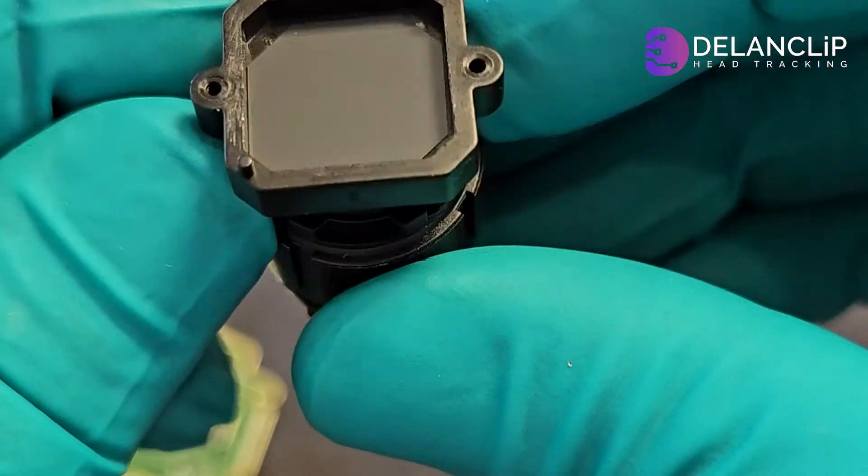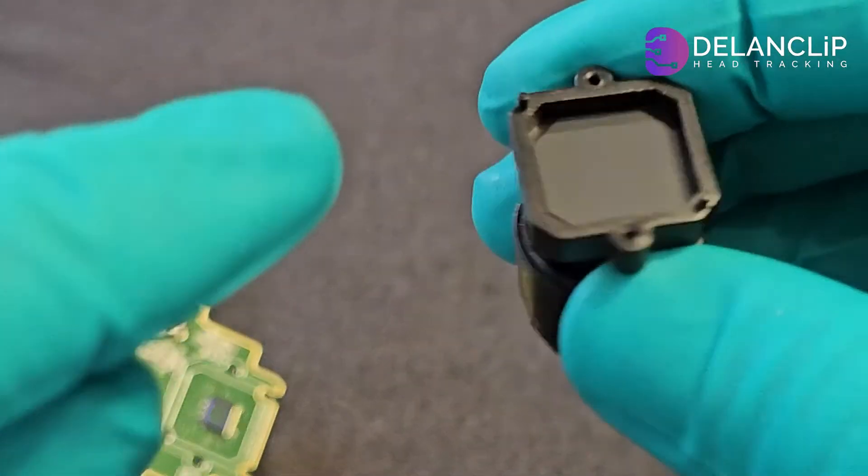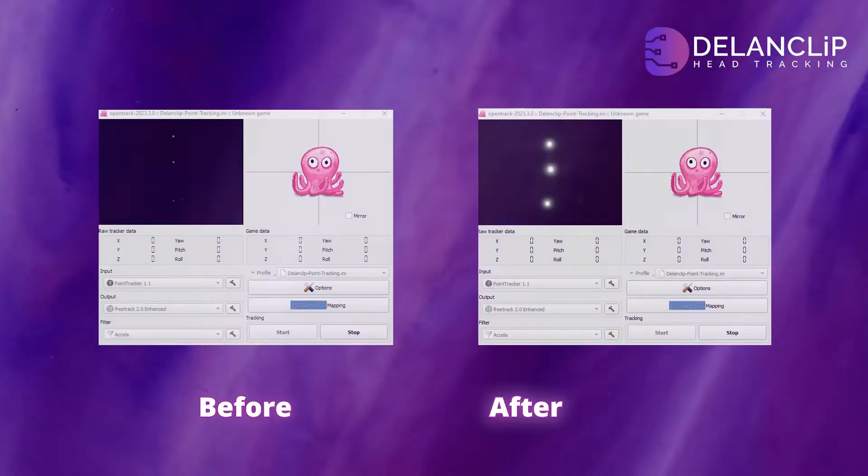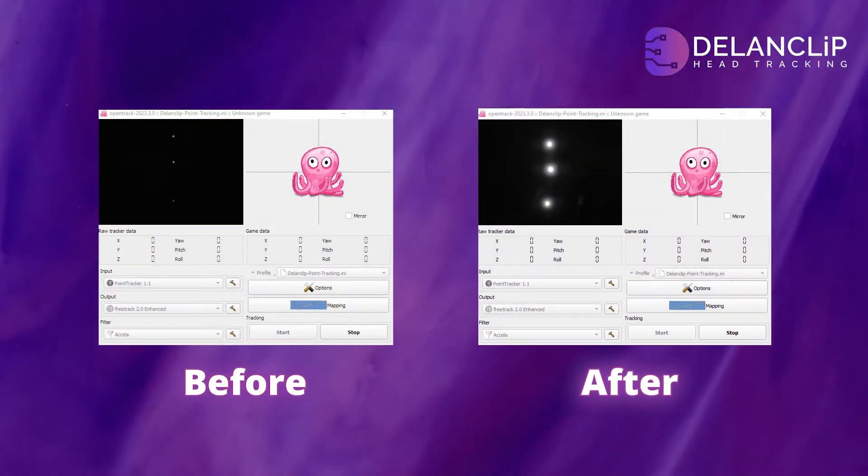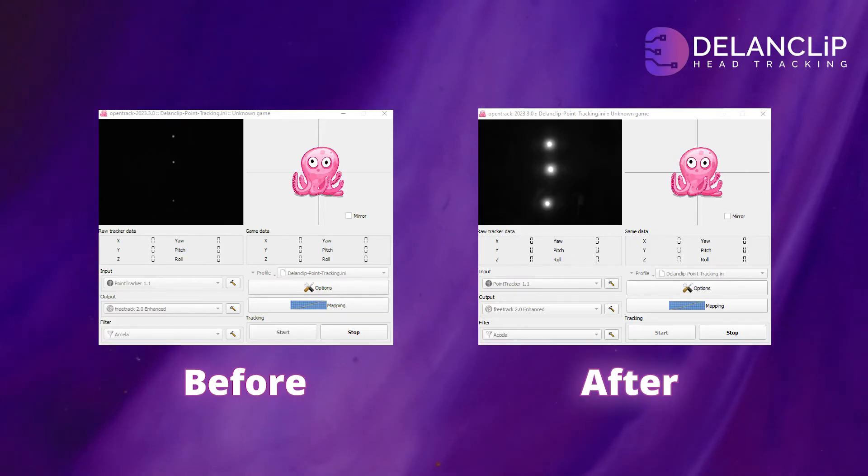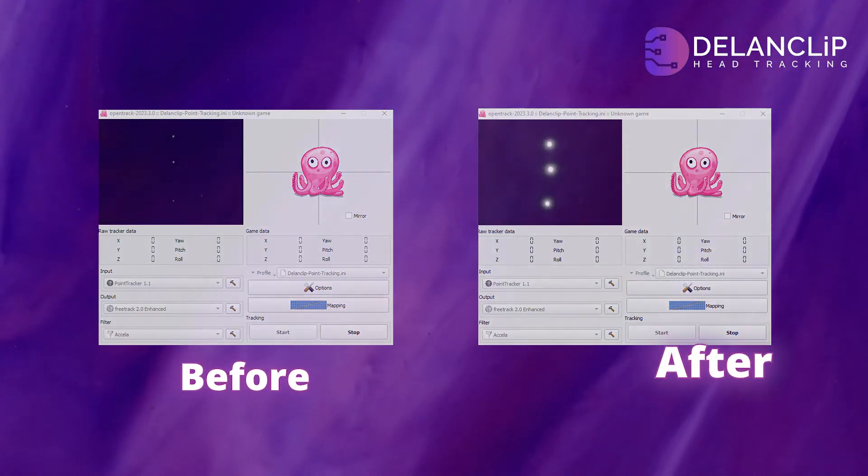Here you can see a comparison of how the camera works before and after the modification. The unmodified camera struggles with IR tracking, but once modified, it picks up infrared light perfectly.